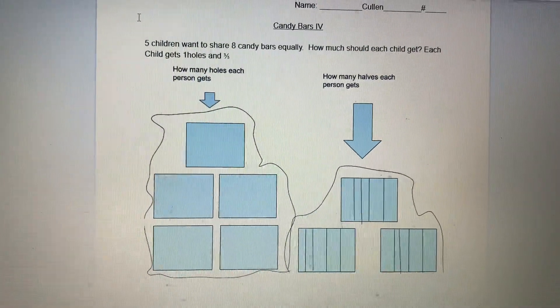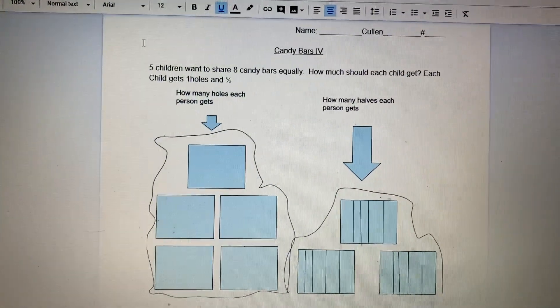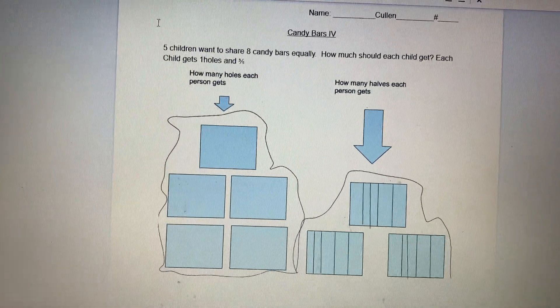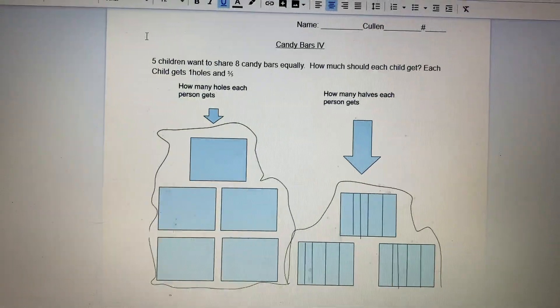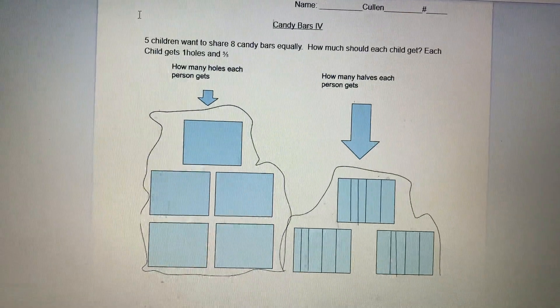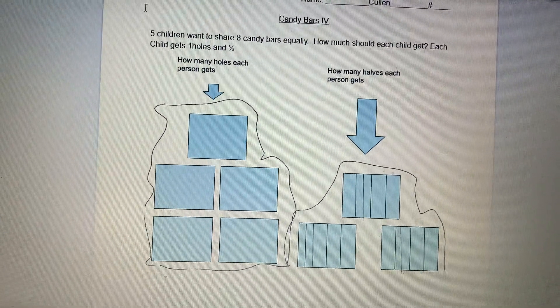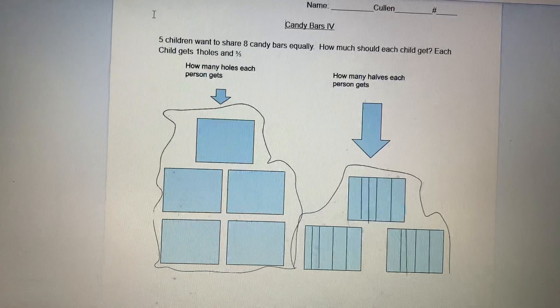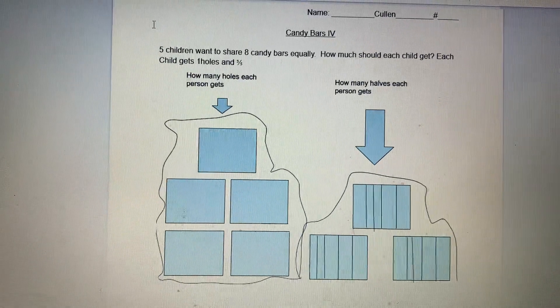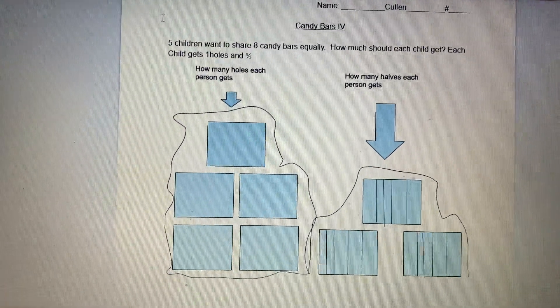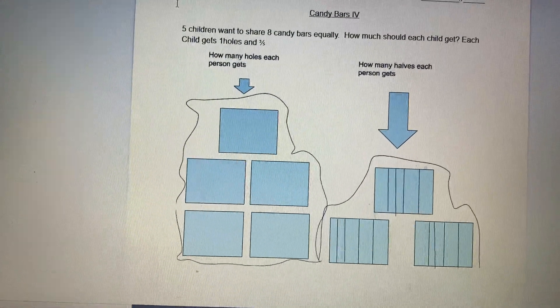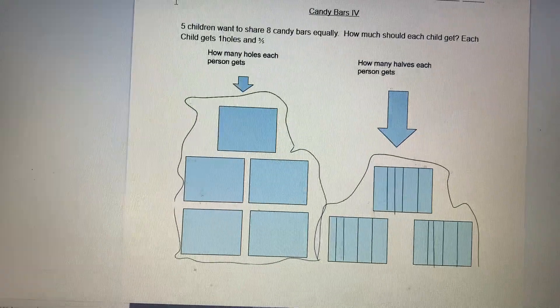So basically what I did is got on here. I read five children want to share eight candy bars equally. How much should each child get? And then straight away I did this Google Drawing because throughout some time, Ms. Shank, my teacher, has been teaching me about fractions and also my mom. So I wrote this down and then first I wrote down one whole and one fifth.